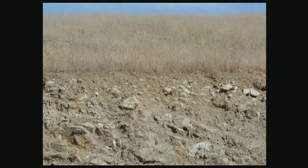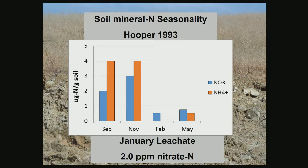When that gets into the ecosystem, we first need to know what the nitrogen cycling is like. In September and November, at the end of the dry season and beginning of the rainy season, we have really high levels of nitrate and ammonium in the soil. That's because even though it's dry, there's a lot of microbial activity over the summer but there's no uptake. By February, things are growing big time, so nitrate and ammonium levels go way down, then start coming up again in May.